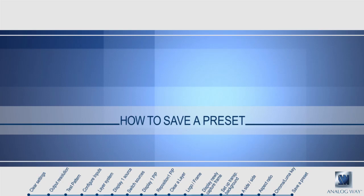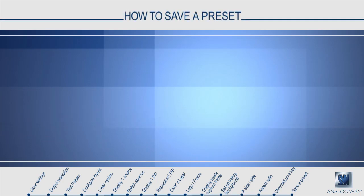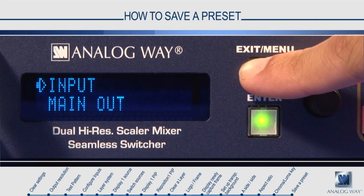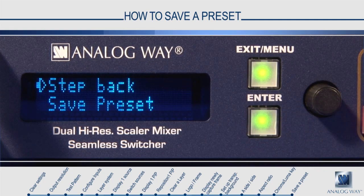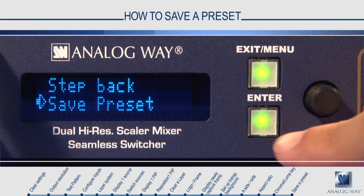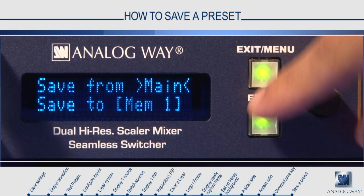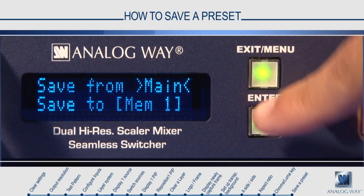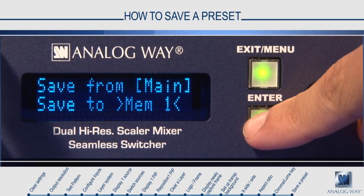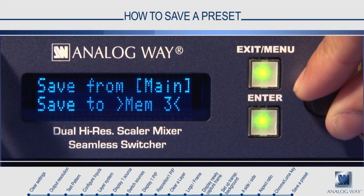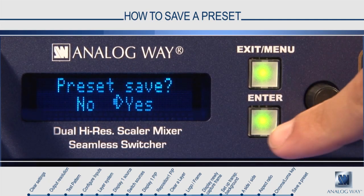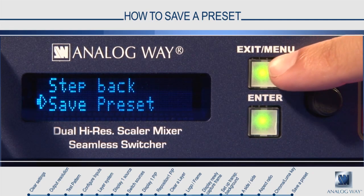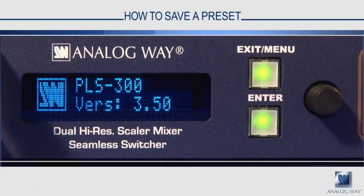How to save a preset. To save a preset, press menu and navigate down to Preset. In the Presets menu, select Save Preset. You can choose to save your preset from the main or the preview screen, and which memory slot to save it in. Press yes to confirm and your preset will be saved. To recall a preset, press the Preset button on the front panel, then select the number corresponding to the preset slot where you saved.